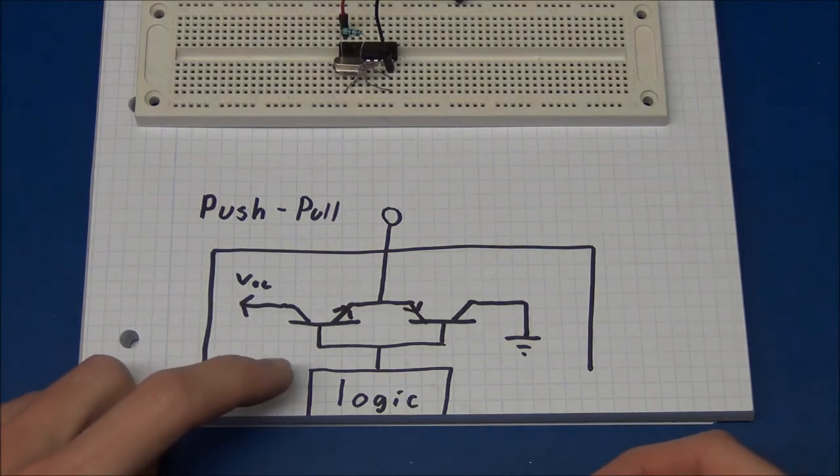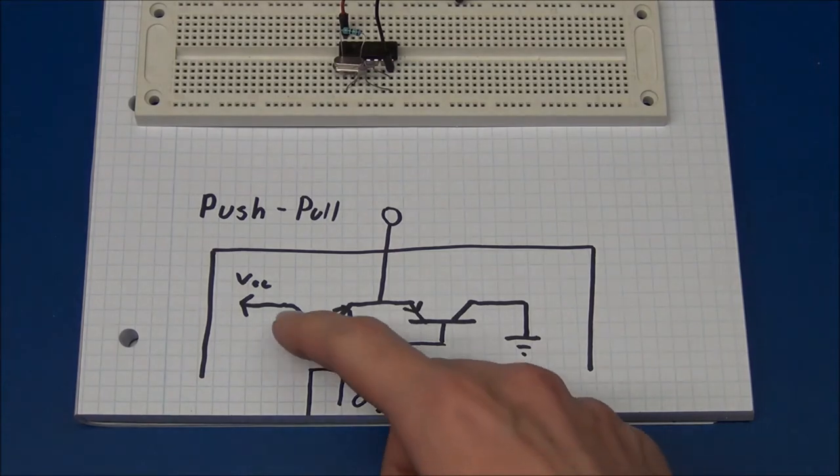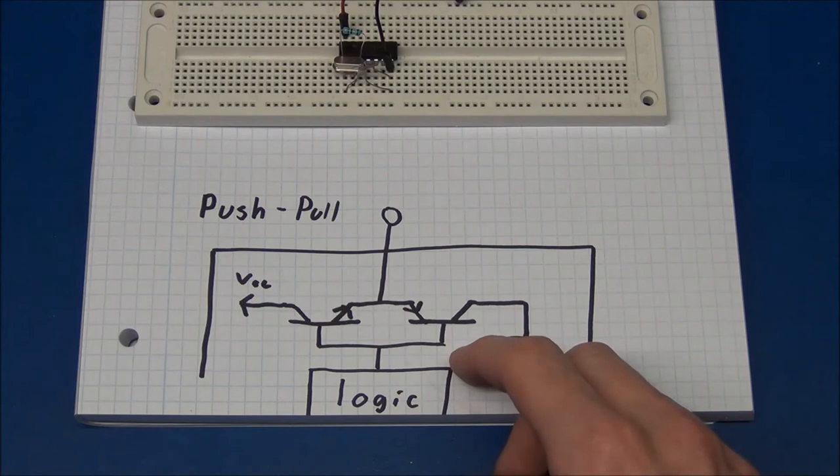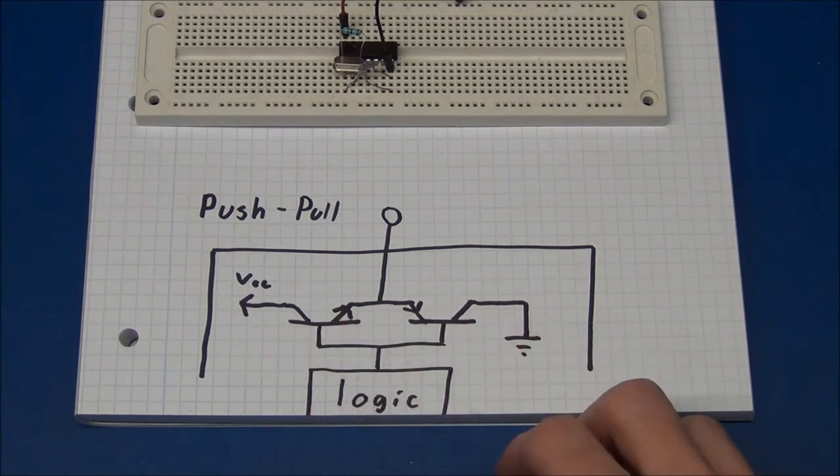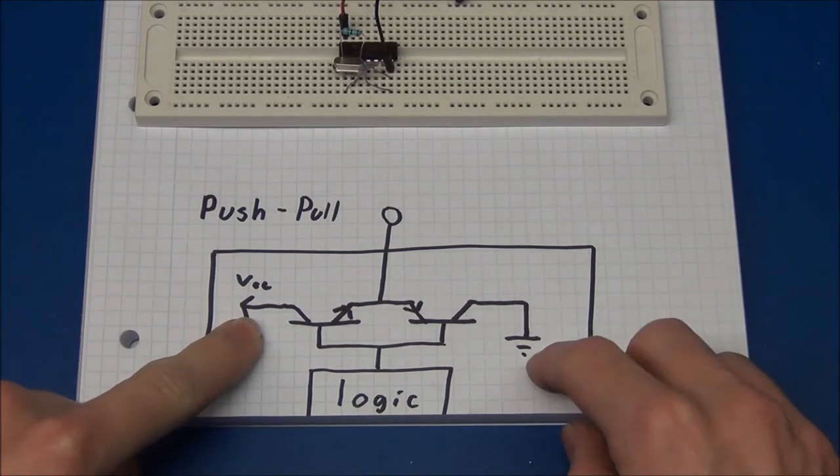And the chip is able to do that because of the two transistor configuration in here. In the real chip it uses MOSFET instead of bipolar transistors, but the idea should be the same. As we can see here we have the VCC on this side, and the ground on this side.